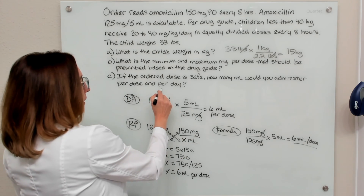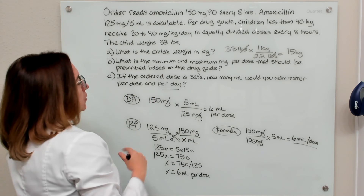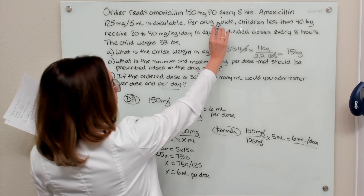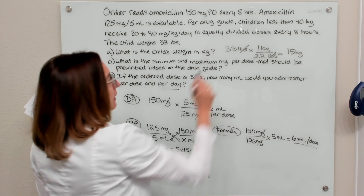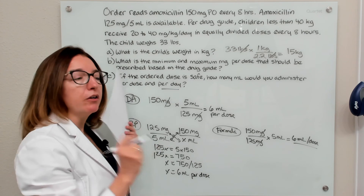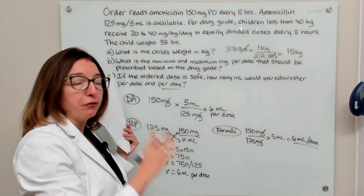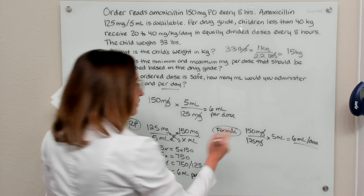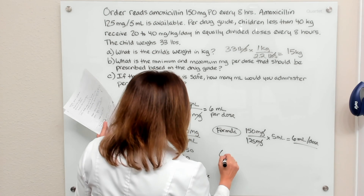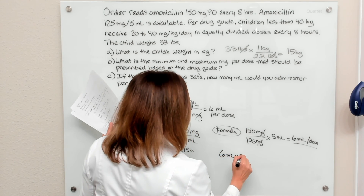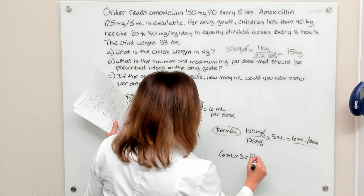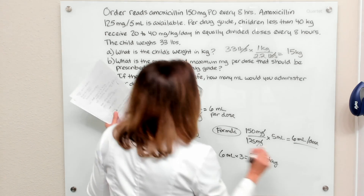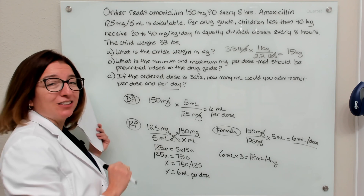Now we need to figure out how many milliliters to administer per day. Because we are giving this medication every eight hours, we are giving it three times within a 24-hour period. So I take my 6 mLs per dose, multiply by three, and get 18 mLs per day that will be administered to our patient.